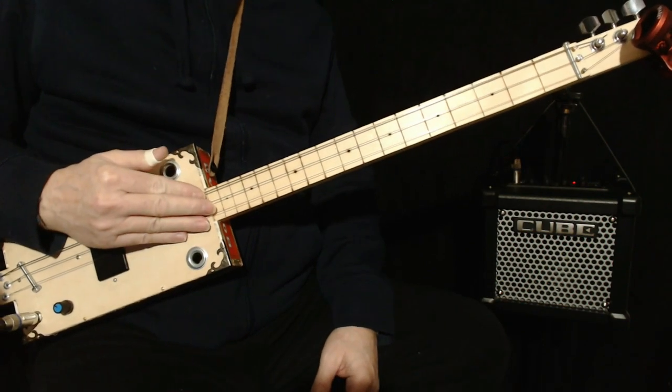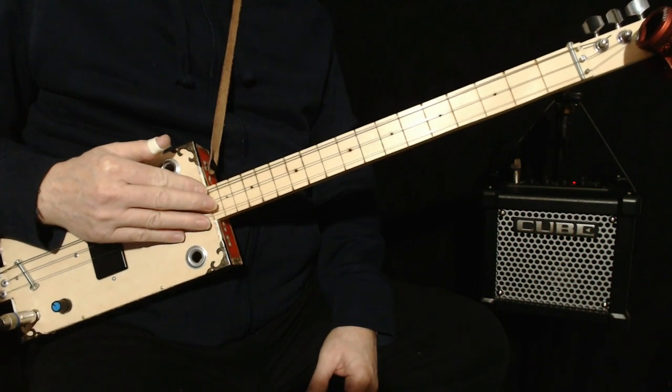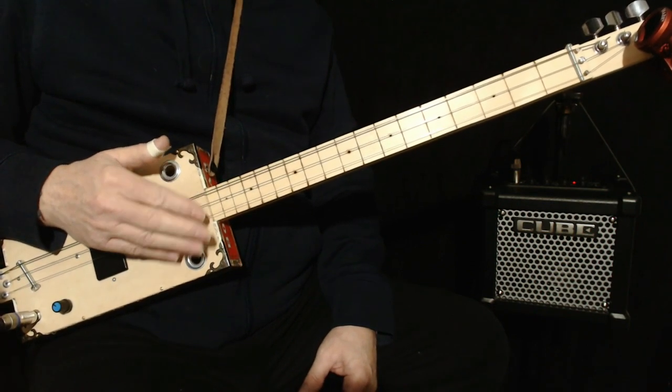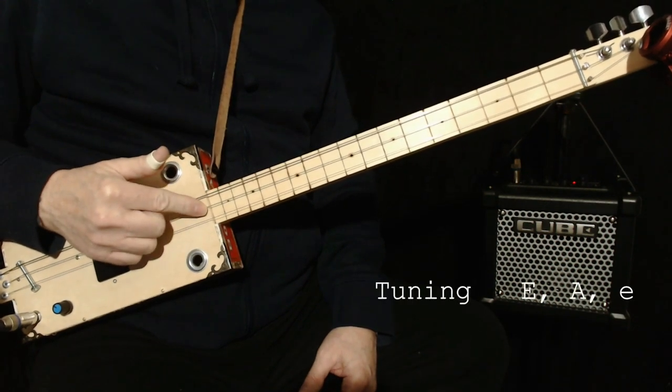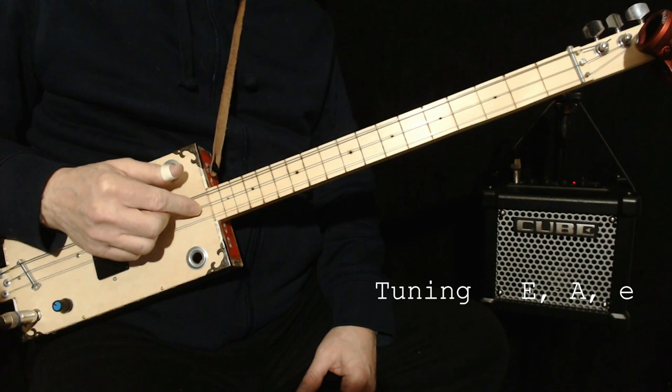I'm tuned to E with a variation. So normally it would be low E, B, and E. What I did was I took the middle string and tuned it down to A, which changes where the power chord is.